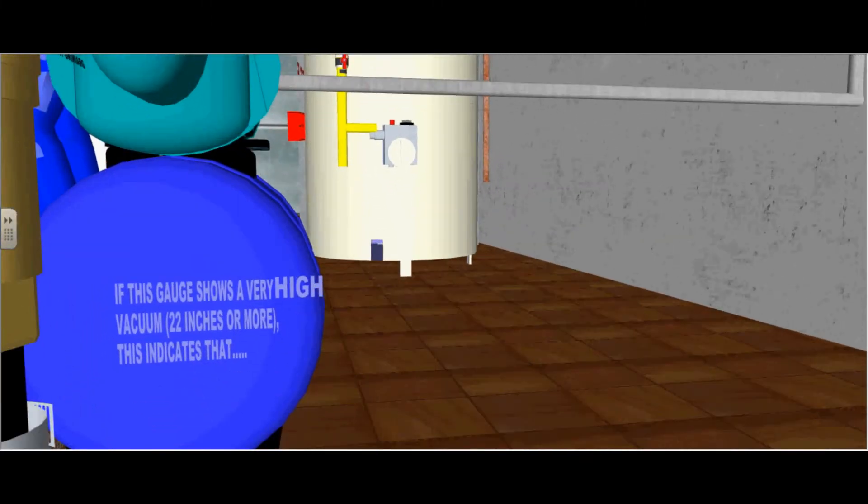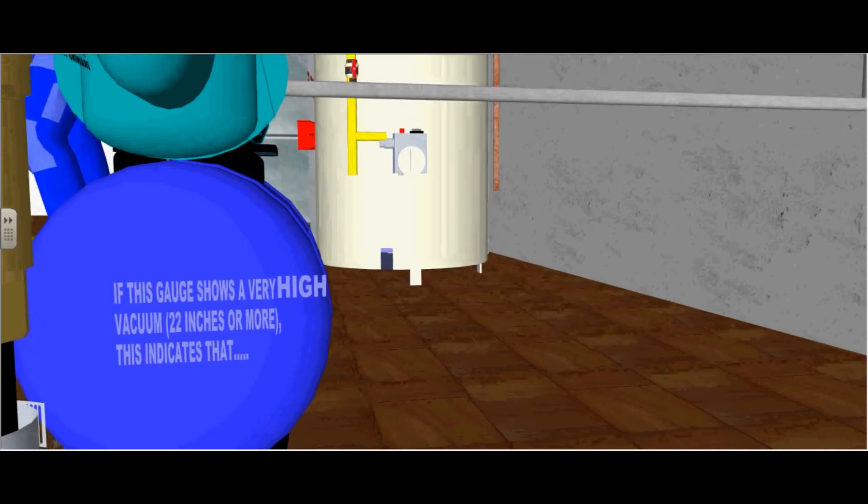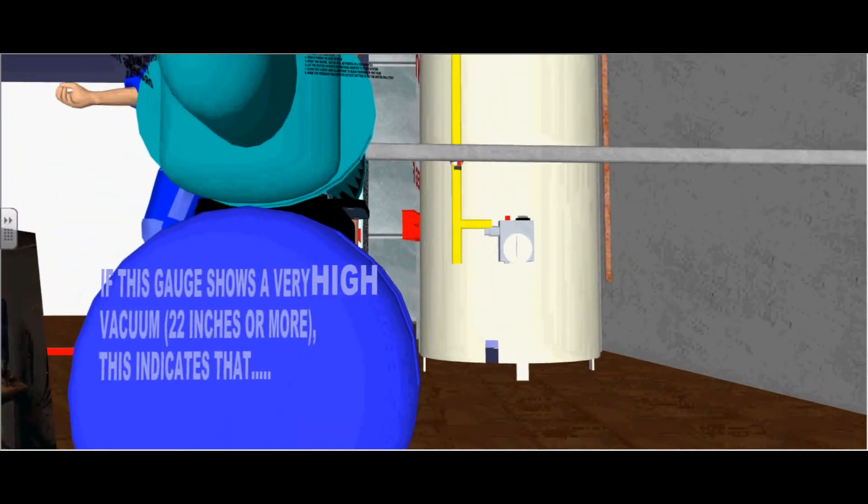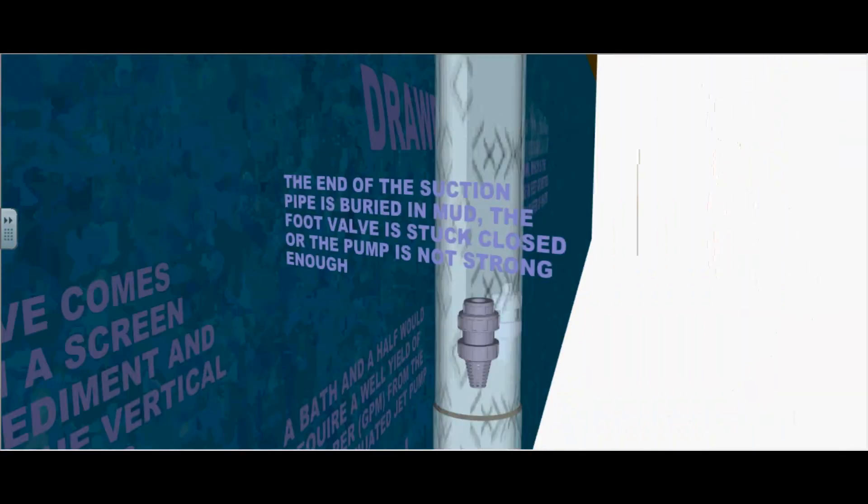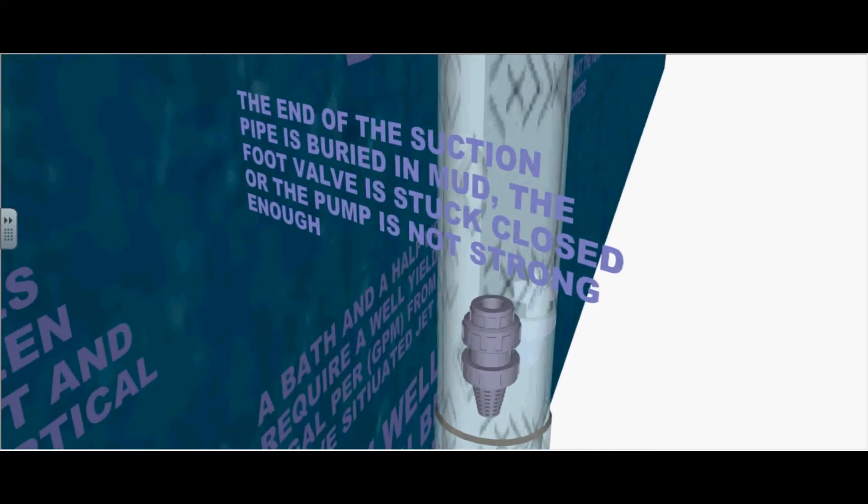If this gauge shows a very high vacuum of 22 inches or more, this will then indicate that the end of the suction pipe is buried in mud, the foot valve is stuck closed, or the pump is not strong enough.